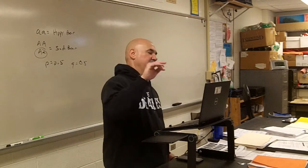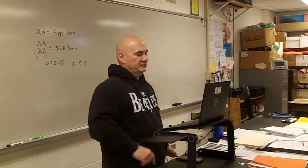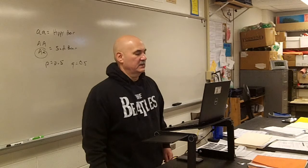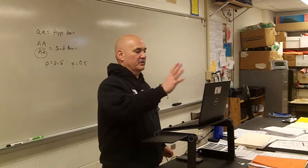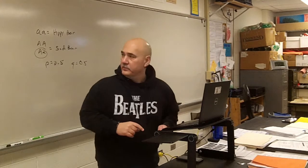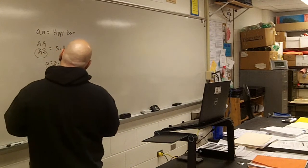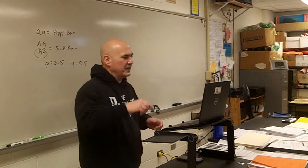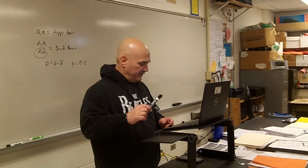We're going to try to get through at least four generations, so don't grab too many — don't put the whole box in. You're going to record this under generation number one: happy bears and sad bears. You can design your own table — have columns for happy and sad.